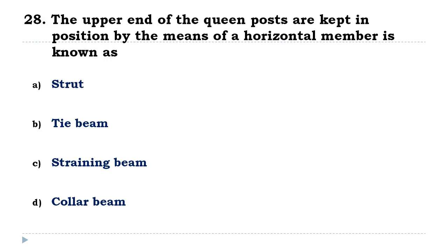The edge of the gable running between the eaves and the ridge is known as the verge. The upper end of the queen post are kept in position by means of a horizontal member known as a straining beam.